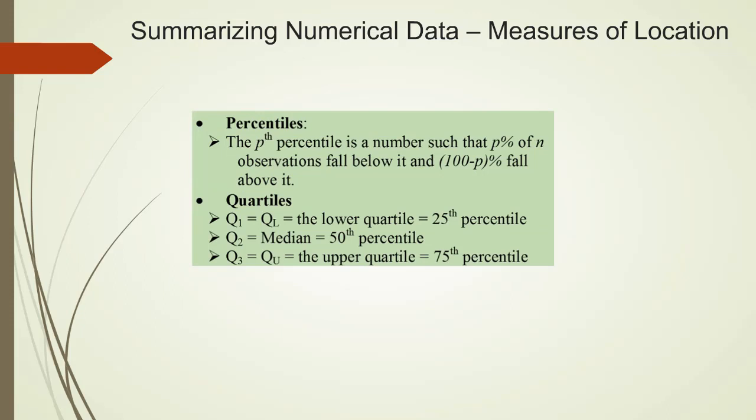The pth percentile is the observation such that p percent of all observations fall below it. Quartiles are some special percentiles. For example, q1 is the lower quartile. That is also the 25th percentile. q2 is also the 50th percentile. That's also the median, which is the middle observation. q3 is the upper quartile, and also the 75th percentile.